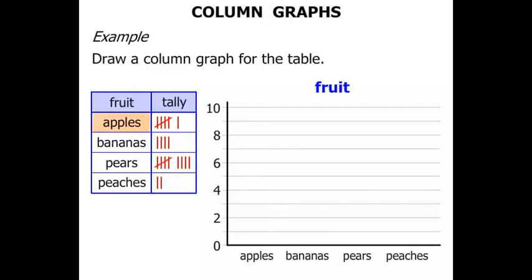So let's start with the apples. Our tally you can see that's a 5 and a 1. So that's 6. So we draw a column above apples up to the number 6.